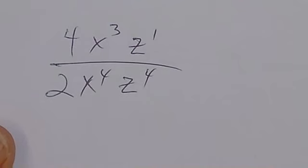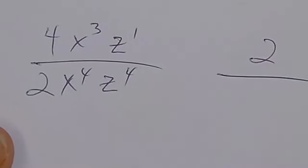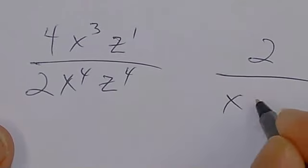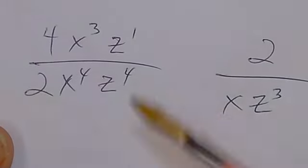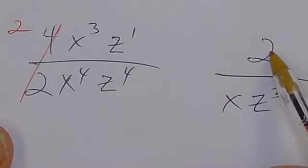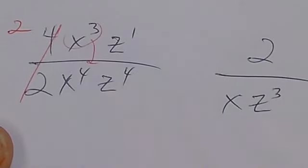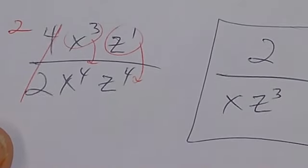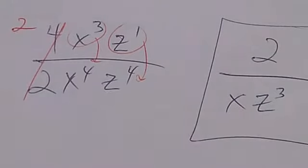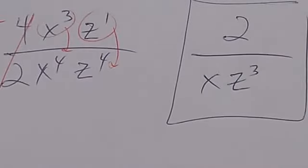The final answer: 4 divided by 2 is 2, staying on top. X³ from the top subtracts with X⁴ — so X goes to the bottom. Z¹ subtracts with Z⁴ — so Z³ goes to the bottom. Answer: 2 over XZ³. Like I said, it doesn't initially have negative exponents, but when you move things up you're kind of using negative exponents.